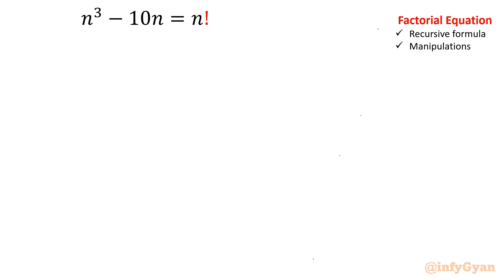I will write this factorial equation as n! equal to n³ - 10n. Just swap the sides. Now what is the recursive formula?